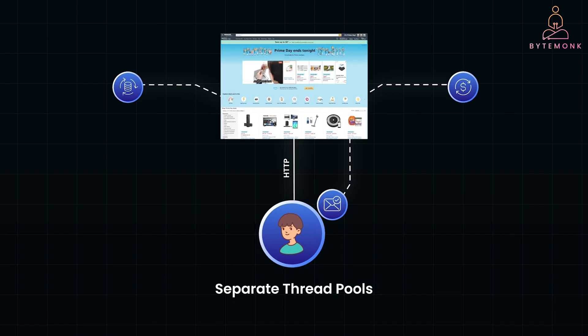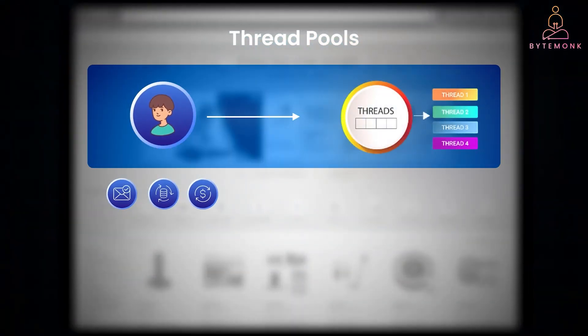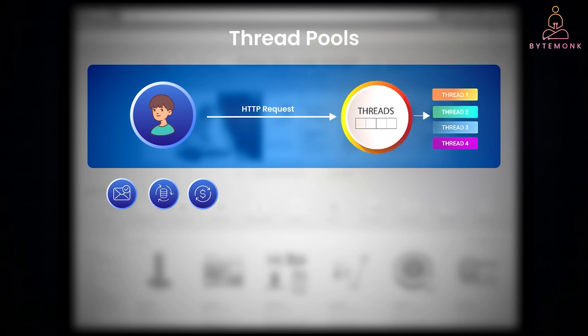For example, you can create a dedicated thread pool for handling HTTP requests. This thread pool ensures that your user interactions, such as browsing or purchasing, are prioritized. By isolating these threads, you ensure that a surge in background tasks doesn't cause the website to slow down or become unresponsive for users.